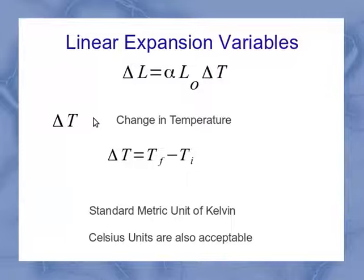Next variable we'll look at is delta T. Again, the delta is the change in. So this is the change in temperature, which would be the final temperature minus the initial temperature. And make sure that you realize that this could be positive or negative. The standard metric unit of Kelvin is what we use for temperature. But it turns out the change in temperature in Kelvin is exactly the same value as the change in temperature in Celsius. So Celsius values for the temperature can be used as well.